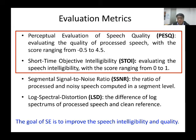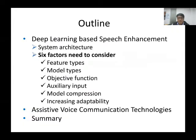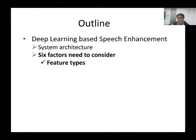The range of PESQ scores is minus 0.5 to 4.5, and the range of STOI scores is 0 to 1. Next, I'm going to present the six important factors for a speech enhancement system, starting with feature types.